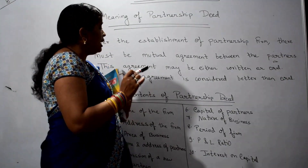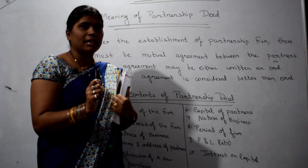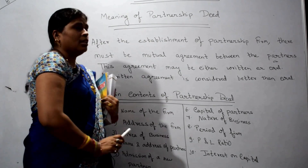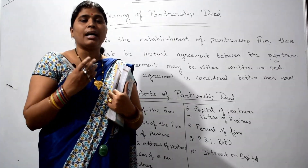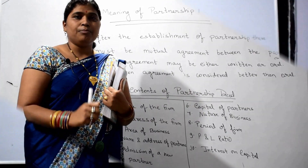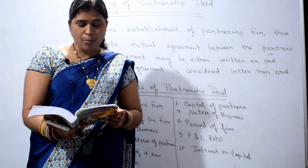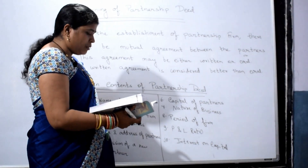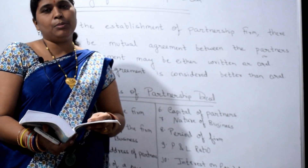Now, what are the main contents of the partnership deed? First of all, the name of the firm — what is the name of the partnership firm by which the firm will operate its business?